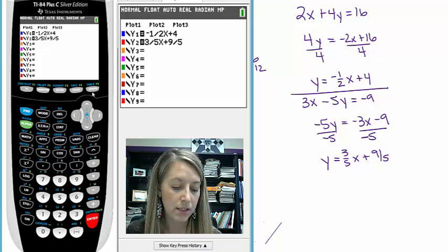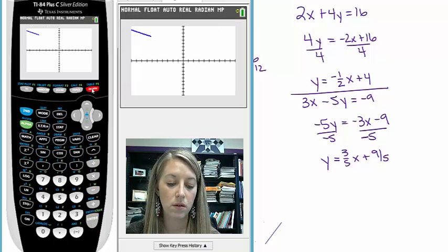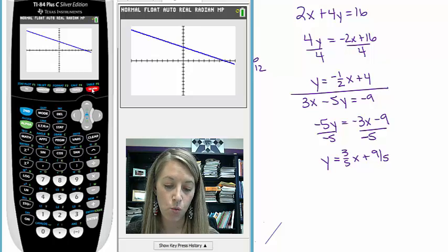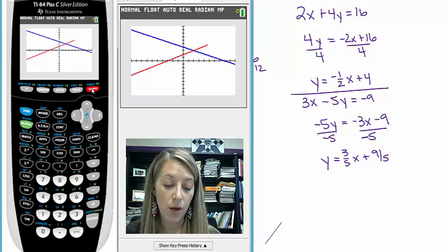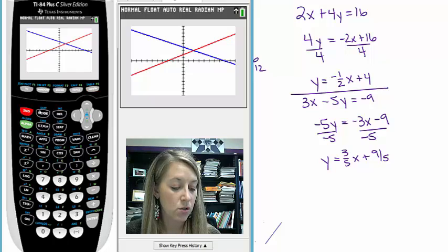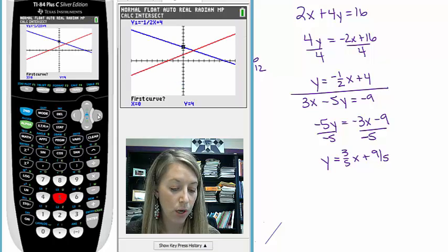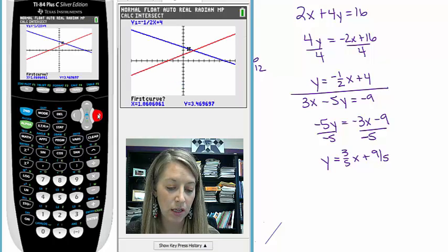Graphing it on my standard window. So again, the blue one is my first equation, Y equals negative 1 half X plus 4. The red one is my second equation, 3 fifths X plus 9 fifths. And to double check my intersection, second calculate option number 5. Go to where I think the intersection is.